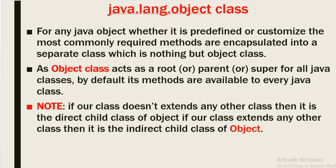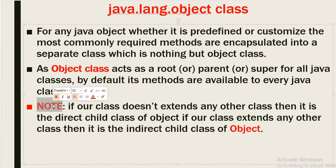One special note: if our class does not extend any other class, then it is a direct child class of Object. If our class extends any other class, then it is an indirect child class of Object.